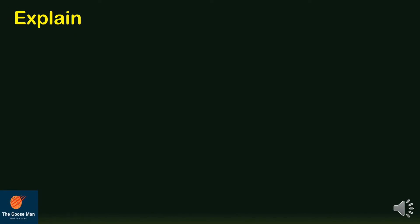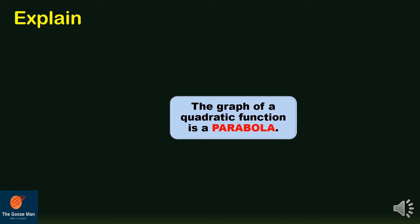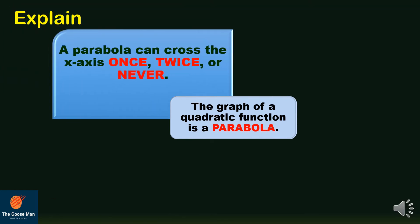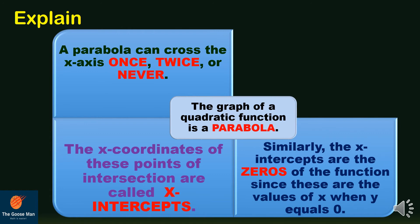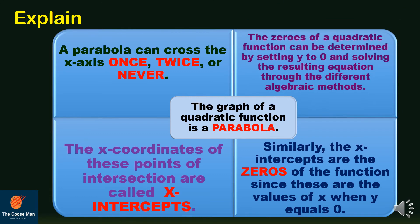The graph of a quadratic function is a parabola, which can cross the x-axis once, twice, or never. The x-coordinates of the points of intersection are called x-intercepts. The x-intercepts are also the zeros of the function, since these are the values of x when y equals 0. The zeros of a quadratic function can be determined by setting y equal to 0 and solving the resulting equation using different algebraic methods.